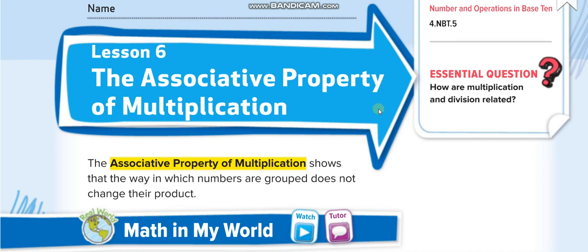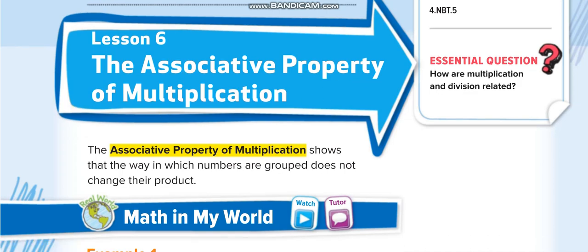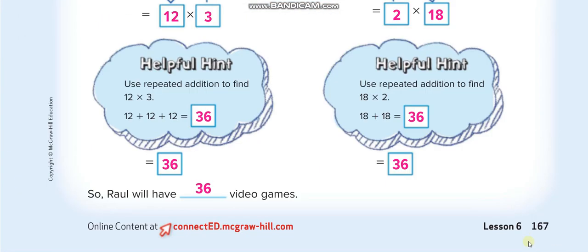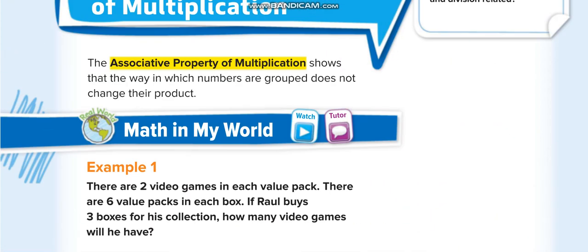Hi everyone, welcome back to my channel Learn Math with Mr. Saad. Today's lesson is for Grade 4, Chapter 3, Lesson 6: the Associative Property of Multiplication, page number 167.